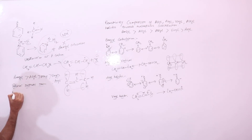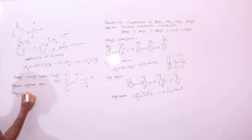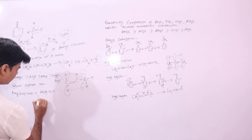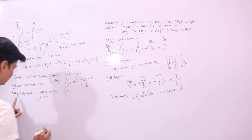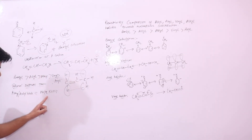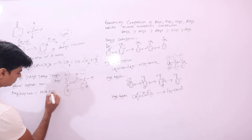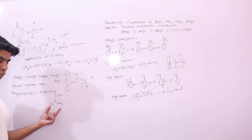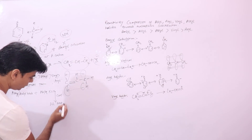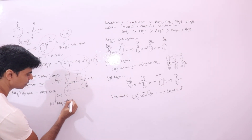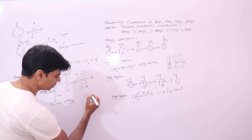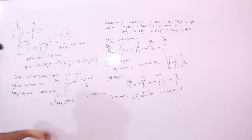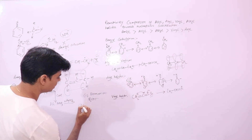In the silver nitrate test, you take the alkyl halide or aryl halide and warm it with alcoholic KOH. Then you cool the solution. After that, you add dilute nitric acid to the cold solution, followed by adding silver nitrate. When you add silver nitrate, in one case you will see formation of a precipitate, and in the second case no precipitate.